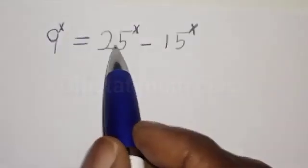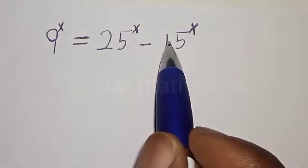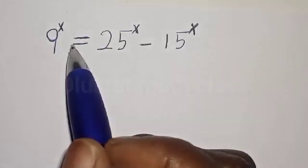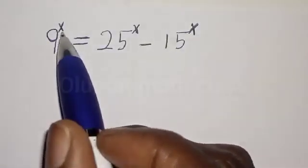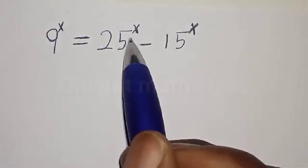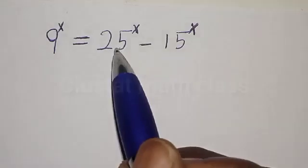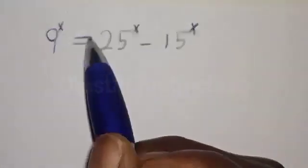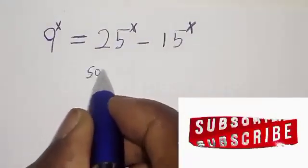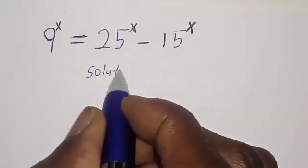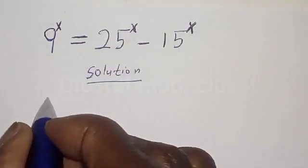9 raised to power s is equal to 25 raised to power s minus 15 raised to power s. Hi everyone, welcome to my class. In this class we want to find the value of s from this given equation: 9 raised to power s is equal to 25 raised to power s minus 15 raised to power s. Before we proceed, please don't forget to like, share, comment and subscribe. Thank you.